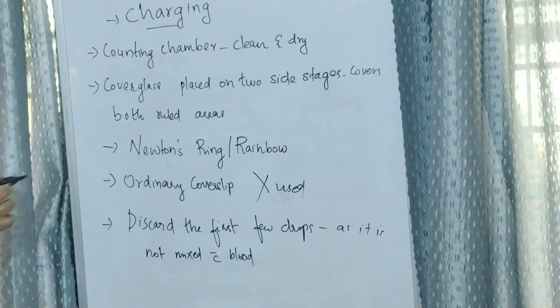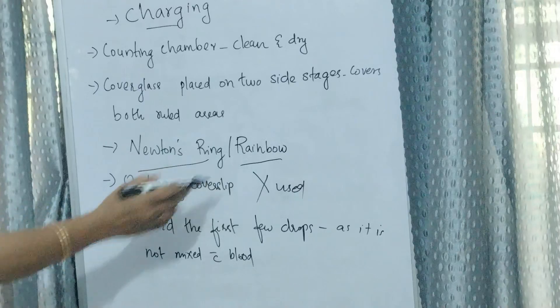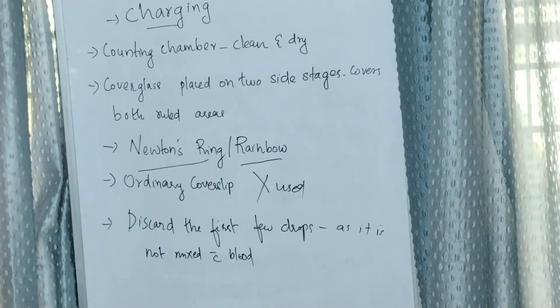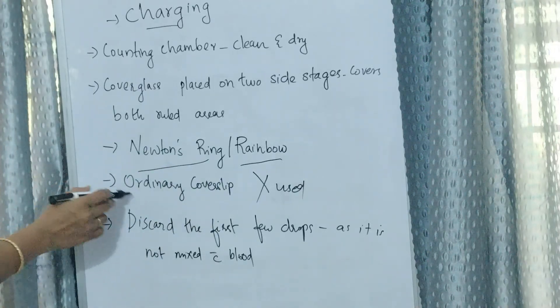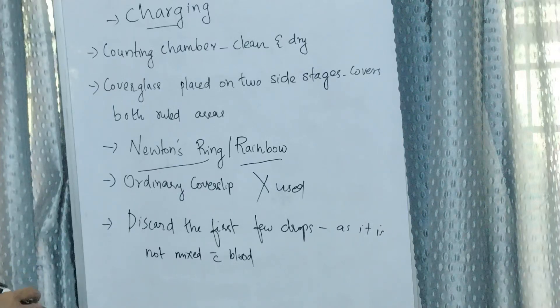Correct placement of the cover glass is assessed by formation of Newton's rings or rainbow on application of slight pressure. Ordinary cover slips cannot be used as they have uneven surfaces.